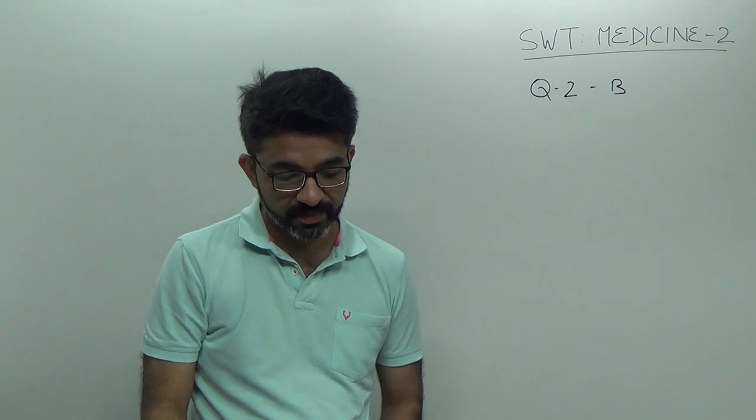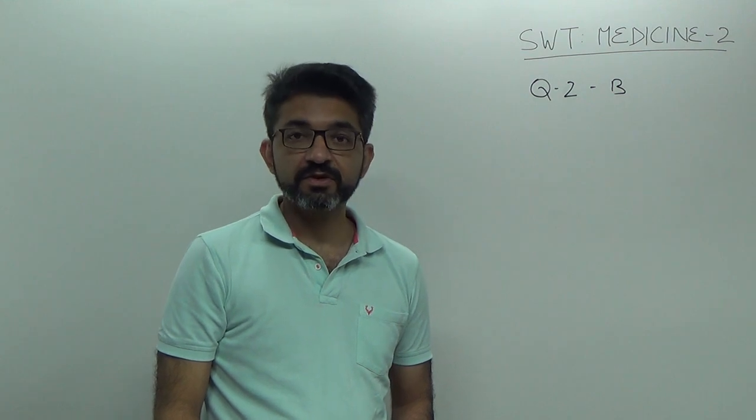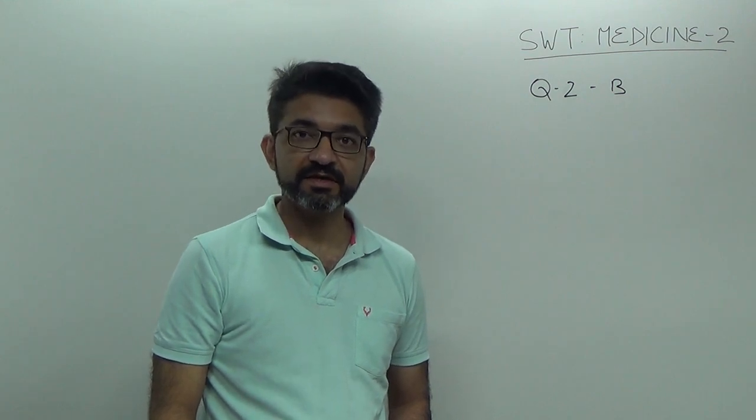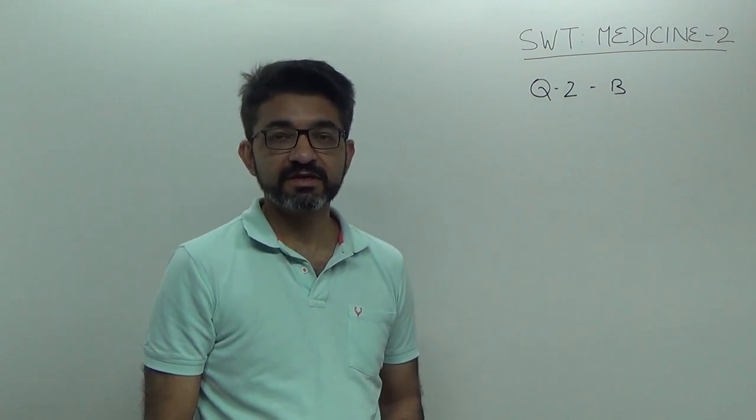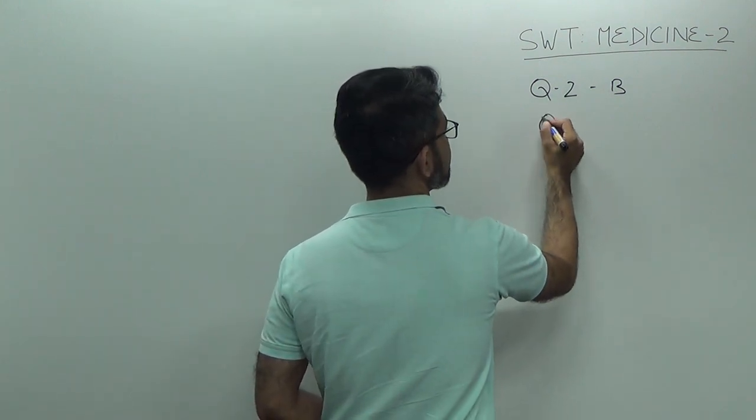Third question, which of the following drugs does not cause hyperglycemia? You know in diuretics, thiazide type of diuretic causes hyperglycemia, not loop diuretics. So the answer is, question number 3 answer is D.